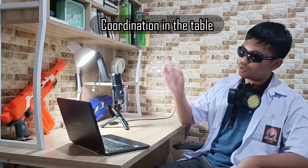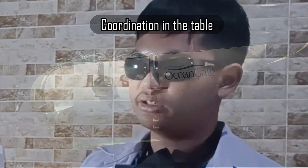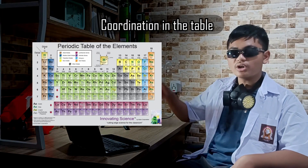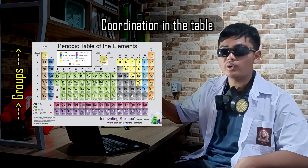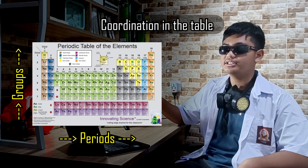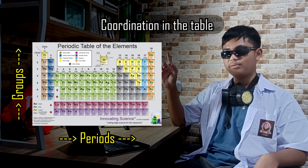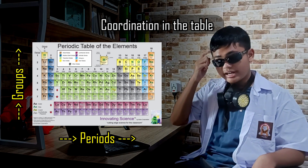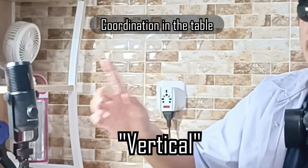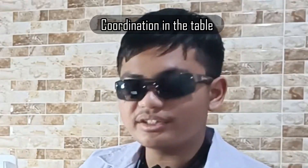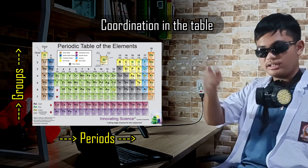Alright, first, let's talk about how to coordinate yourself through this table here. So we have the table here. The vertical columns are called groups, and the horizontal rows are called periods. This is genuinely important because if you don't memorize this, you will get confused. So make sure to memorize this, keep a mental note. Horizontal is period. Vertical is group. I am doing the wrong hand motions. Horizontal is period. Vertical is group. Remember that.